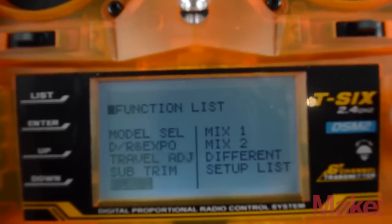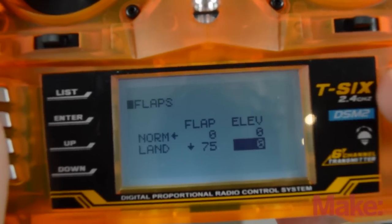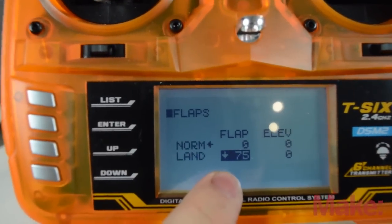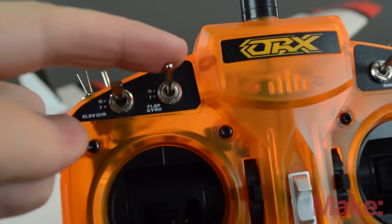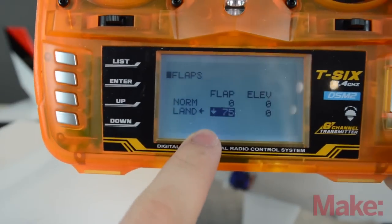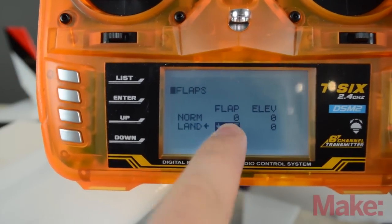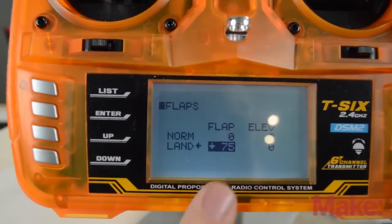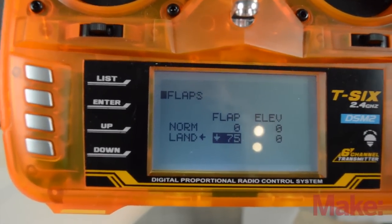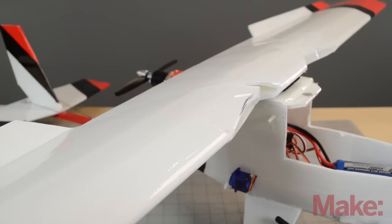Back in the radio we're going to go into the menu and scroll down to flaps. Now we're going to go to land position which is the down position of the flap switch. And then we're going to give it down about 75% or 50. It depends on how much you want and you can do some experimenting to see how it slows down your plane. If we go back to the plane we can see that our flaps just went up. So we do have something reversed.